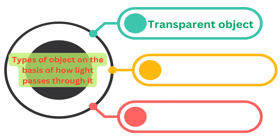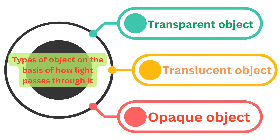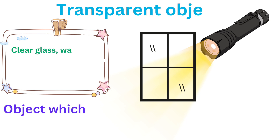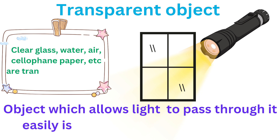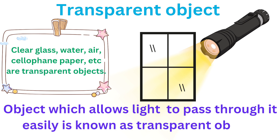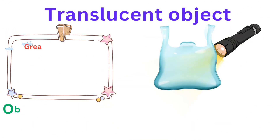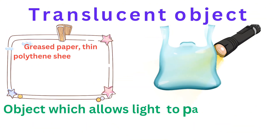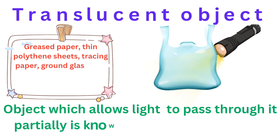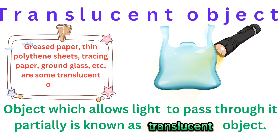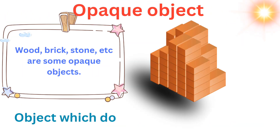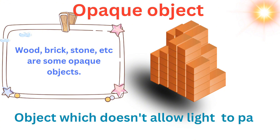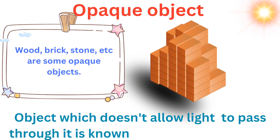Types of objects on the basis of how light passes through them. An object which allows light to pass through it easily is called a transparent object. An object which allows light to pass through it partially is known as a translucent object. An object which doesn't allow light to pass through it is called an opaque object.